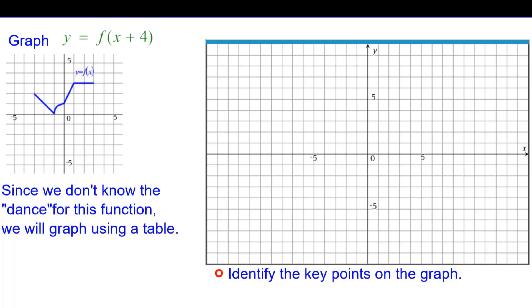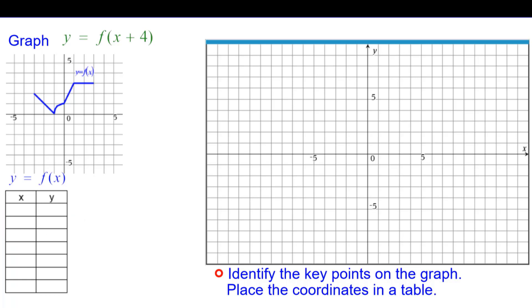So we first need to identify the key points that are on the graph of f of x and place those coordinates into a table. So here's our table. We'll pick them one at a time. So negative 3 comma 2 is the key point. Negative 1 comma 0, 0 comma 1, 1 comma 3, and 3 comma 3.